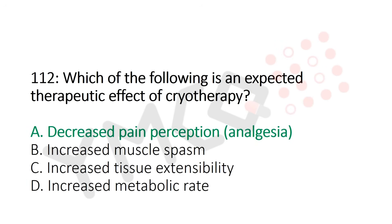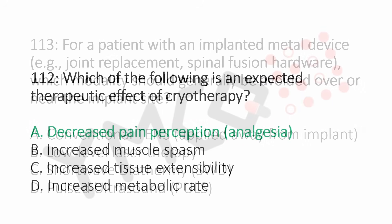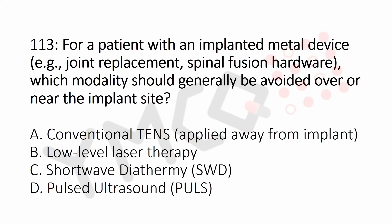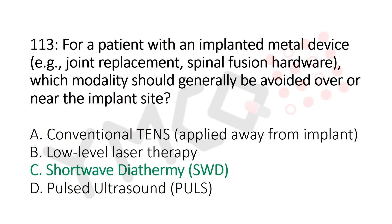Question number 113: For a patient with an implanted metal device, which modality should be generally avoided over or near the implant site? Option A: conventional TENS. Option B: low-level laser therapy. Option C: shortwave diathermy. Option D: pulsed ultrasound. And the answer is Option C: shortwave diathermy.